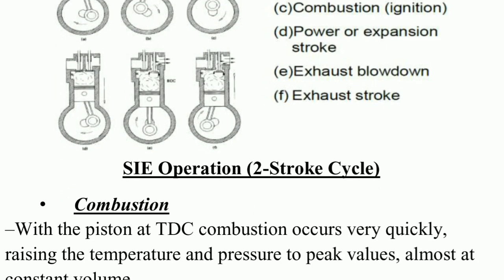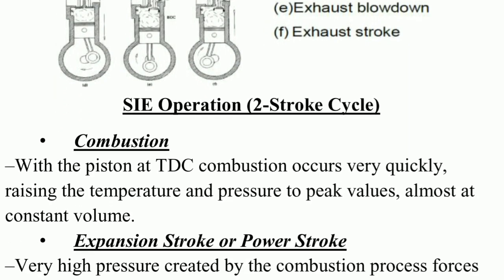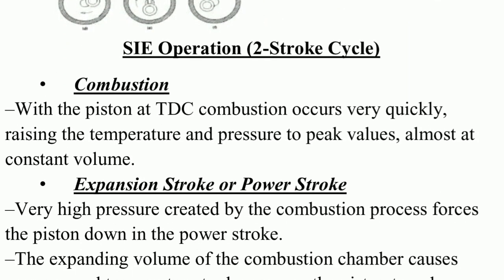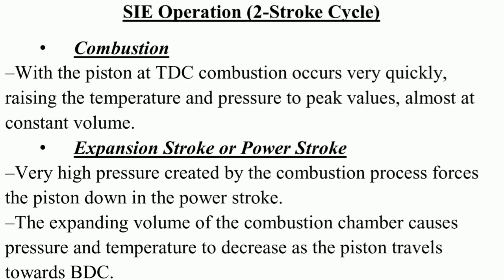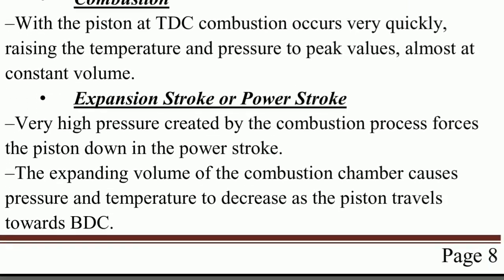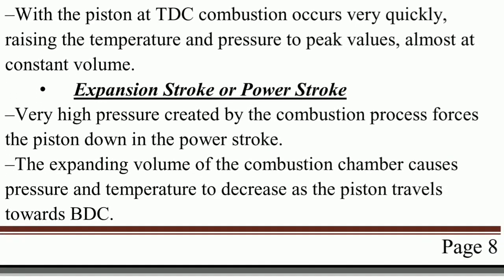For SI engine operation in a two-stroke cycle: with the piston at TDC, combustion occurs very quickly, raising the temperature and pressure to peak values at almost constant volume. In the expansion or power stroke, the very high pressure created by combustion forces the piston down. The expanding volume of the combustion chamber causes pressure and temperature to decrease as the piston travels towards BDC.